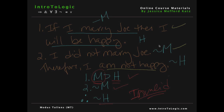So it could be true that if I had married Joe I would have been happy, and I did not marry him, but I am still happy because there is something else that makes me happy. So we need to be very careful when using modus tollens, and especially careful with whether we are negating our antecedents or our consequents. Modus tollens only says that if we have a conditional and the negation of the consequent, we can get the negation of the antecedent — but not the other way around.